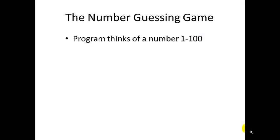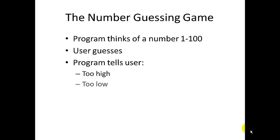So the game works like this. First the program thinks of a number between one and a hundred. The user gets to make a guess. The program tells the user if his guess is too high, too low or right. And if it's right, the program will tell the user how many guesses it took him to get the right answer.